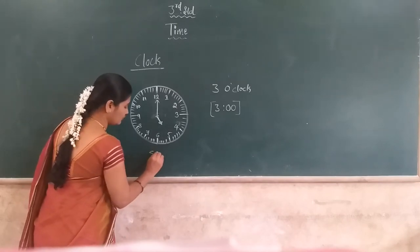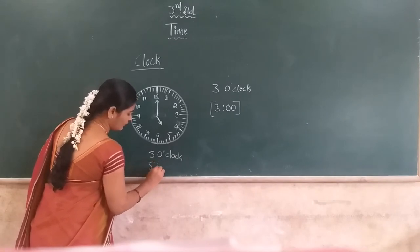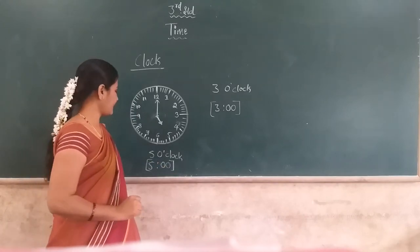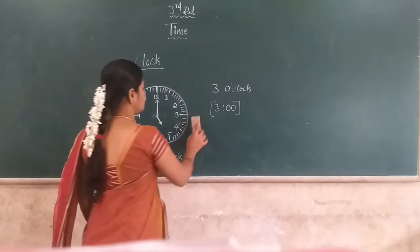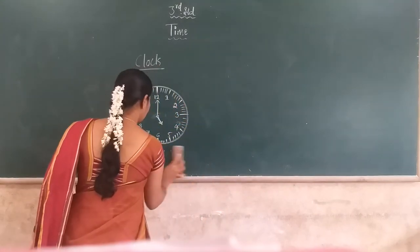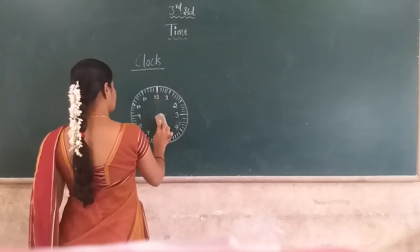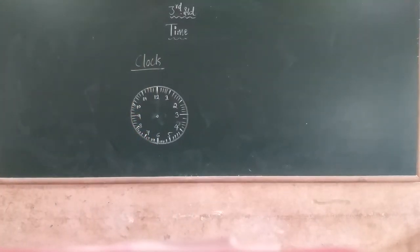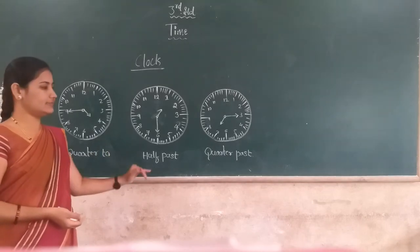How to write it? 5 o'clock. How to read it? 5 o'clock. This is the time reading of the clock. I will draw the different positions of the hands for 2 o'clock and 3 o'clock.